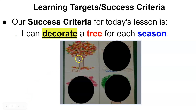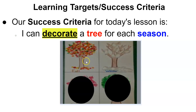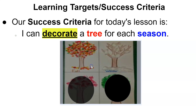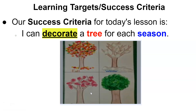So for fall, we have lots of different colors — red, orange, yellow, green leaves. And then winter we have maybe some snow on the trees but no leaves at all. Then we have spring with some blooms that are starting, and in summer it's a full green tree with lots and lots of leaves.